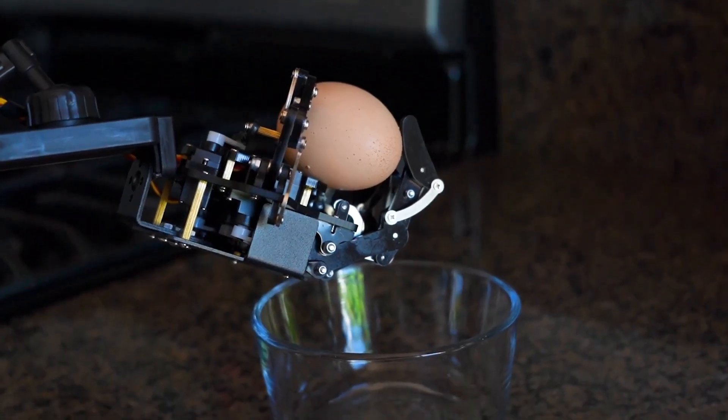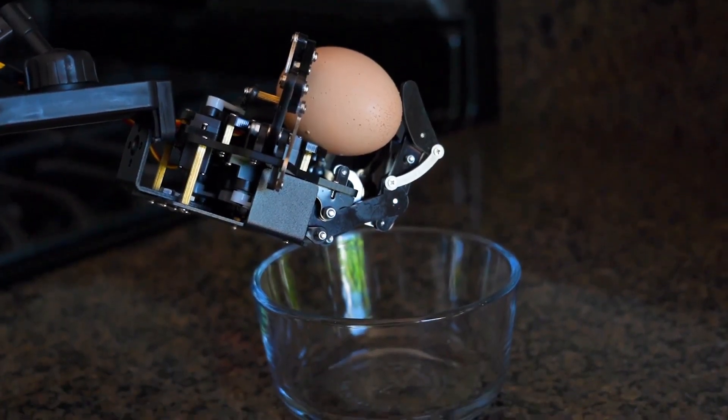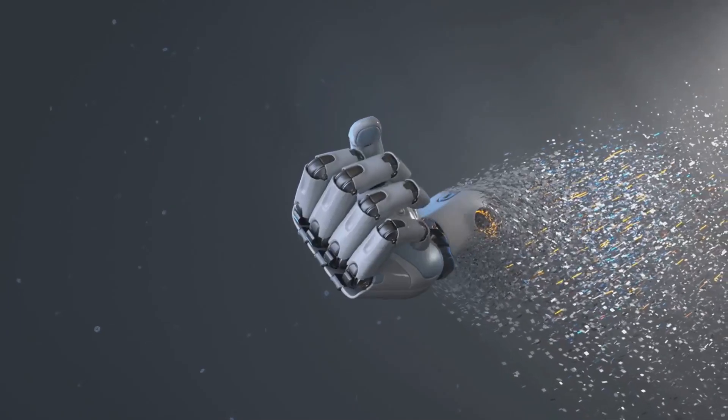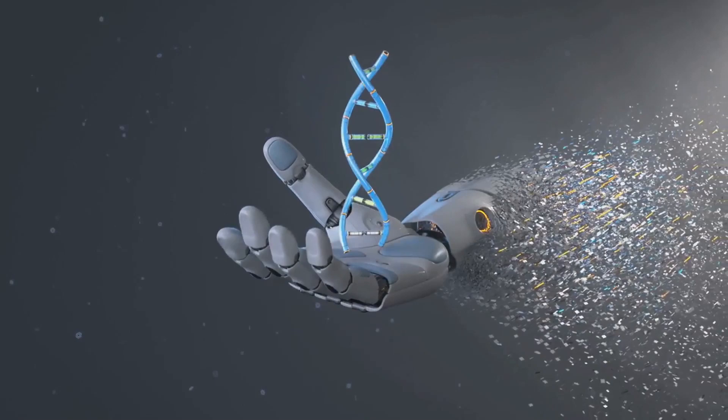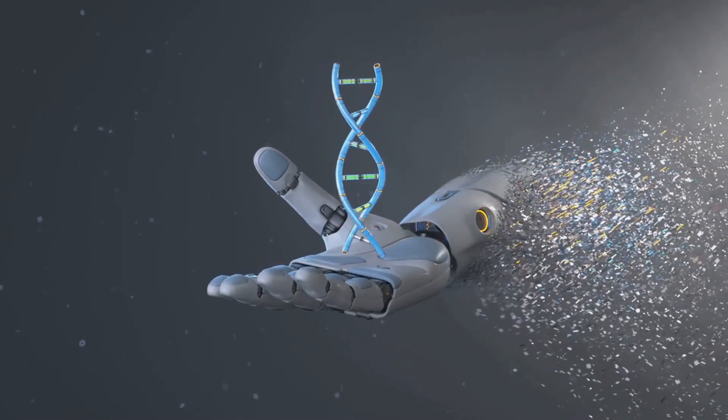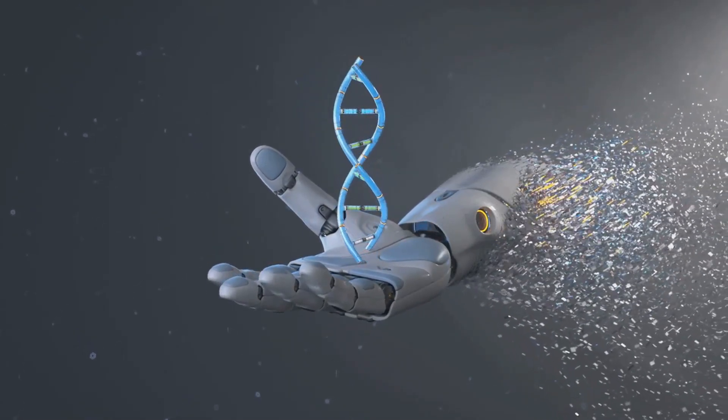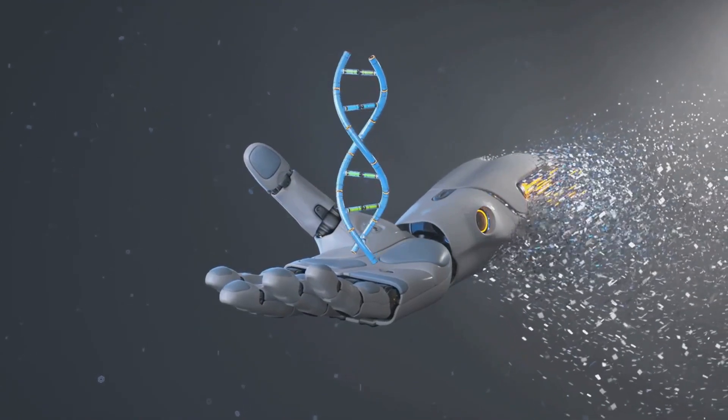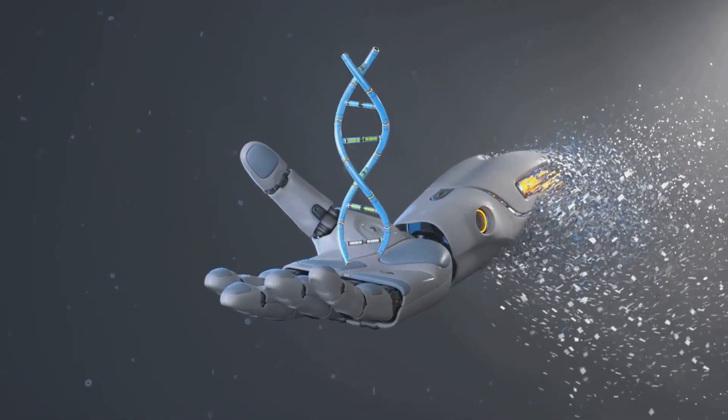Imagine the complexity of the human hand, its ability to gently hold an egg without cracking it, or to firmly grip a hammer and drive a nail. Replicating this delicate balance of strength and finesse in a robotic hand is a monumental task. But with the integration of classic robotics technology and innovative design, the impossible is becoming possible.